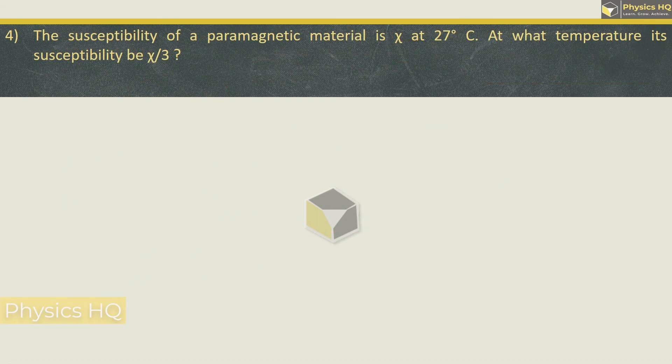Let us check out the next sum. The susceptibility of paramagnetic material is Chi at 27 degree Celsius. At what temperature its susceptibility will become 1 third? So, initially, the magnetic susceptibility is denoted by Chi. And afterwards, the magnetic susceptibility is becoming 1 third.